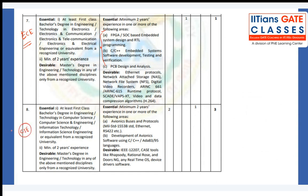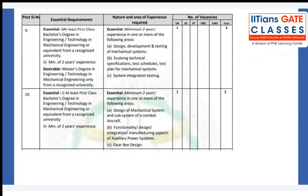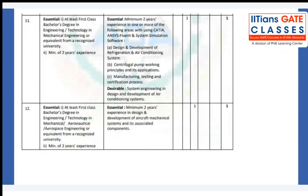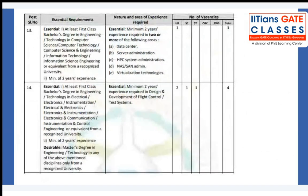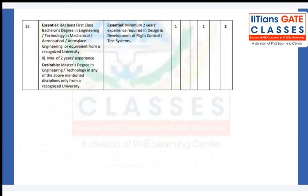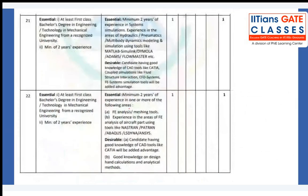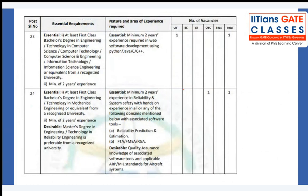Not only EC, there are vacancies for CSC as well. The branches covered so far include Mechanical, Production, Aeronautical, Aerospace, EC, and CSC. Additionally, there are vacancies for EC Instrumentation, Electrical, and other disciplines. For all branches, at least some vacancies exist, and if you have a Master's degree you don't need two years of experience for Project Engineer 1.